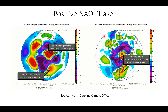Let's take a closer look at a positive NAO phase. These are the 500 millibar height anomalies during a positive NAO phase on the left, and the surface temperature anomalies on the right. Purple shading indicates troughing and below normal heights; orange and yellow coloring indicates above normal heights. When you see purple coloring, think troughs, colder than normal temperatures, unsettled weather, more storm activity and precipitation. When you see orange coloring, that indicates upper-level ridges and warm, drier conditions.